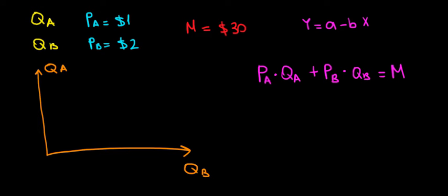Now let's substitute the values and see what we get. Price of apples is one dollar, so 1 times quantity of apples plus the price of bananas is two dollars, so 2 times quantity of bananas equals the money that we have, thirty dollars. Now remember, we want to write quantity of apples depending on quantity of bananas.